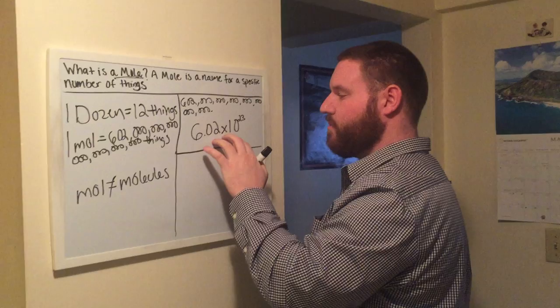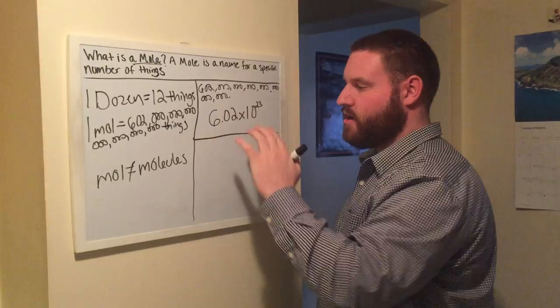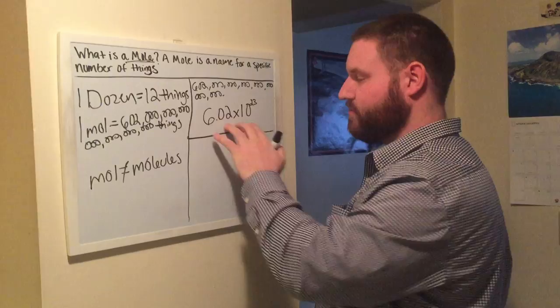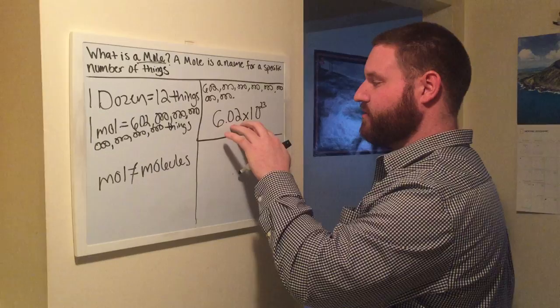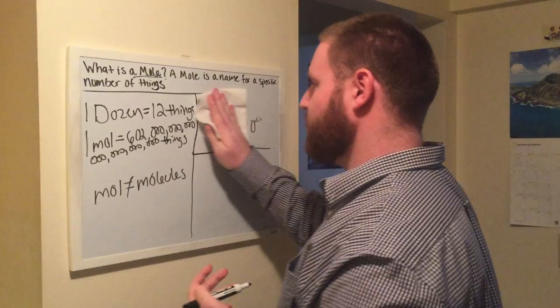This number was made by a chemist named Avogadro. Now, Avogadro made this number, he came up with this number as a way to specify how many moles of something, how many moles are in something. This is equal to the mole. He came up with this number to specify how many of this is in a mole.